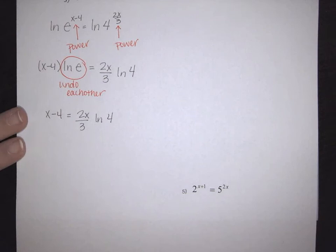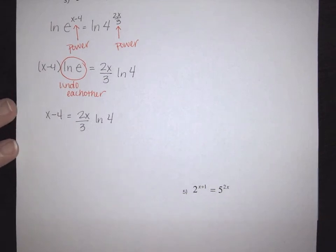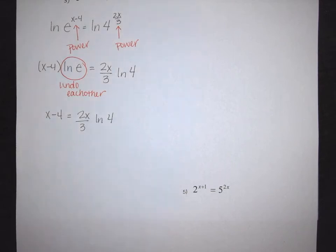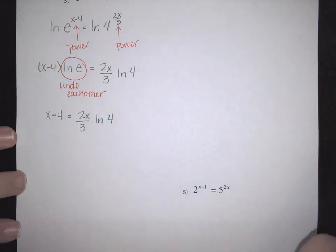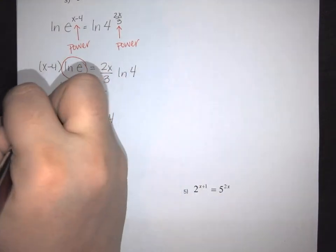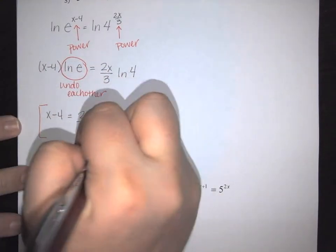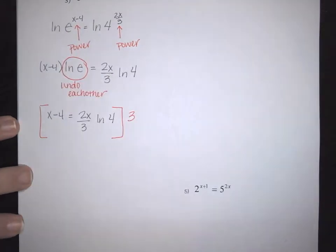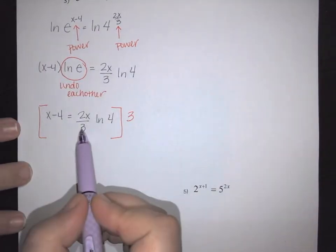Now I need to solve. One of the things I'm going to do is multiply the whole thing by 3, which gets rid of the 3 on this side.